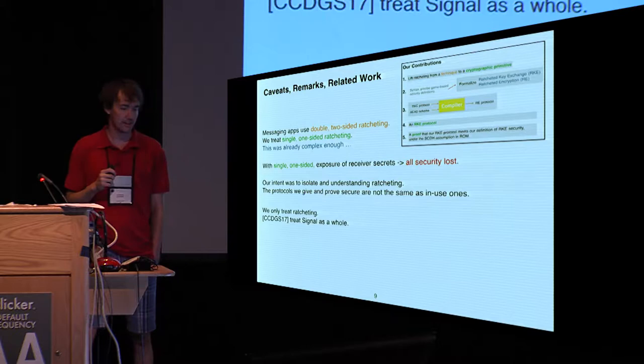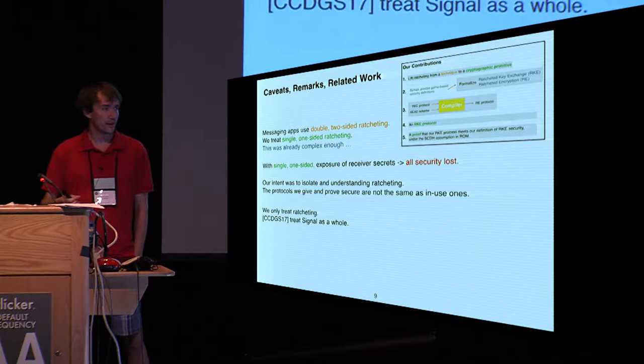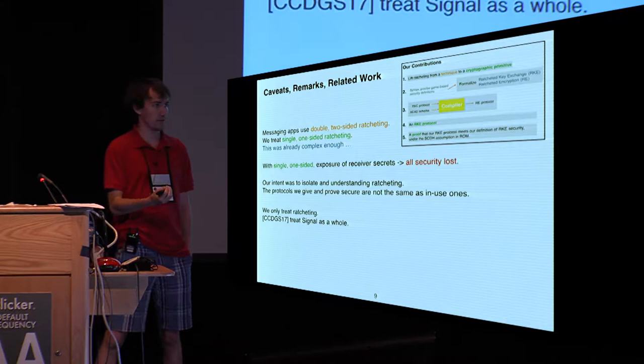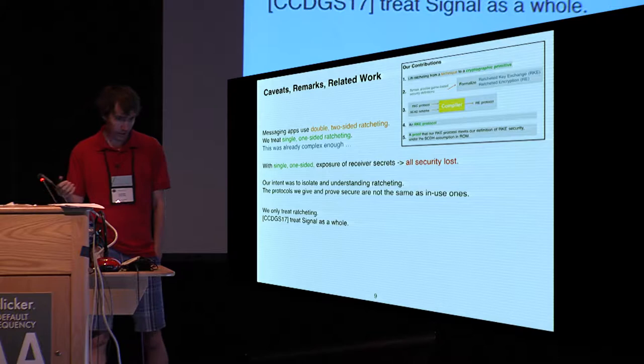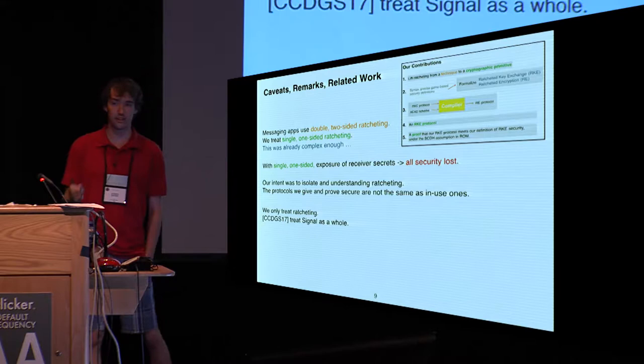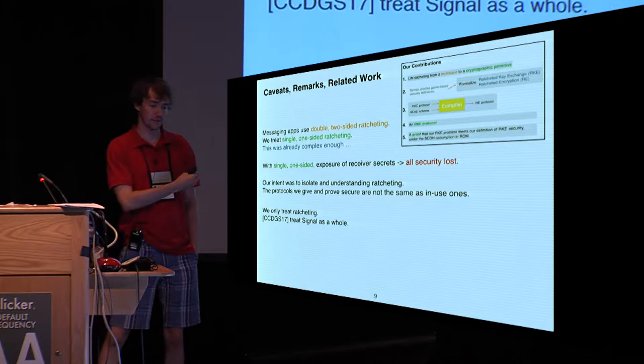A few caveats and remarks before I dig into the details of those contributions. Messaging apps in practice use what we call double two-sided ratcheting. To kind of abstract out the core of what ratcheting is about in our work, we just treated single one-sided ratcheting. In the single one-sided ratcheting model, we think of one of our parties as strictly being the sender and the other party as being the receiver. And one important thing to emphasize here is that in this model, we can't hope for security against the exposure of the receiver secrets. If an adversary gets the receiver secrets, all security will be lost. We're only providing these more advanced security notions against the compromise of the sender's secrets.